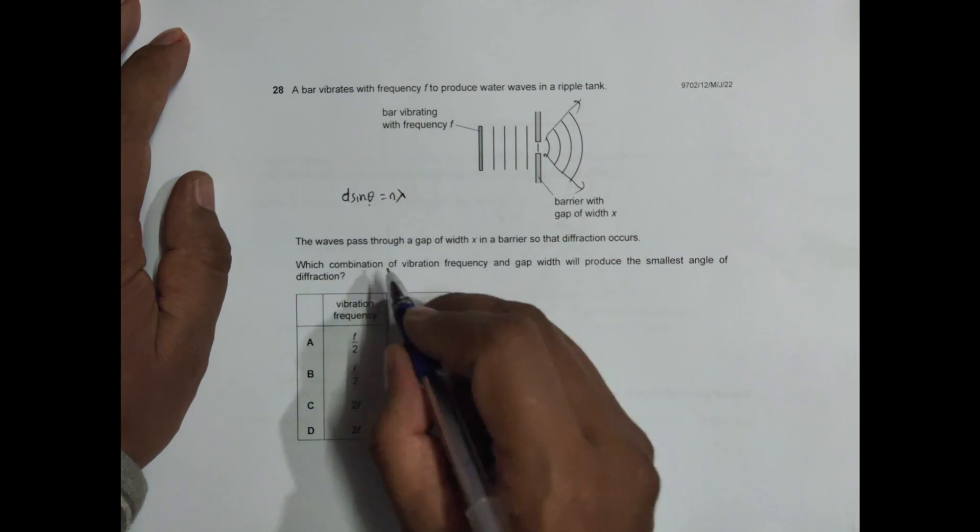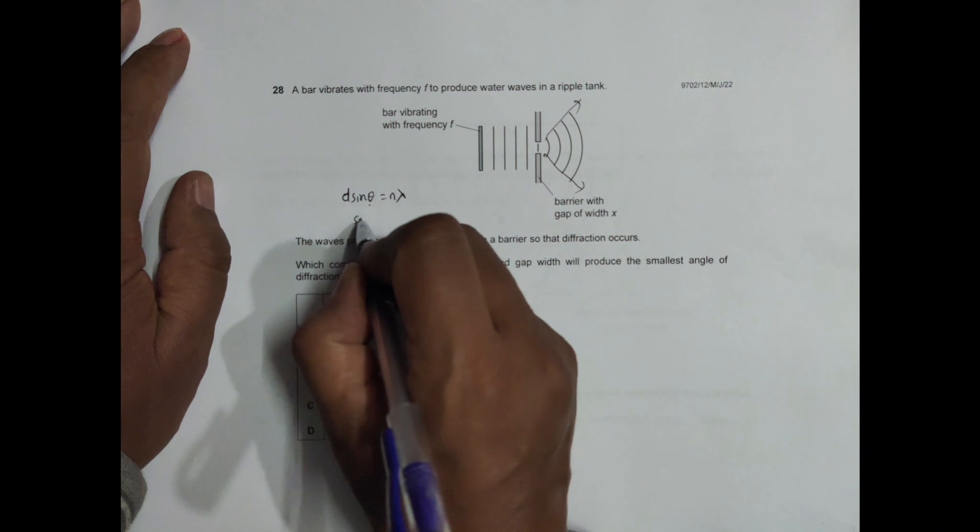Since I have to solve for theta, I must have sine theta equals n lambda by d.